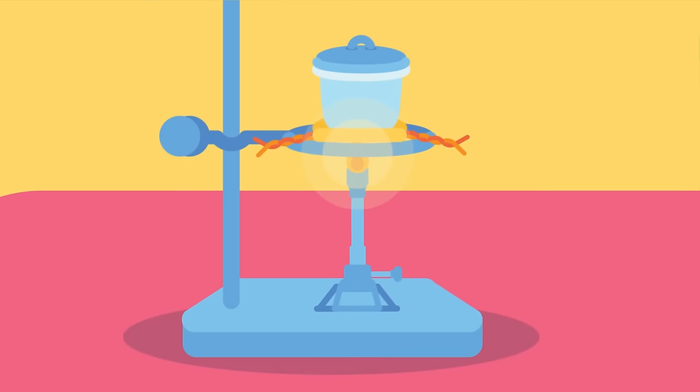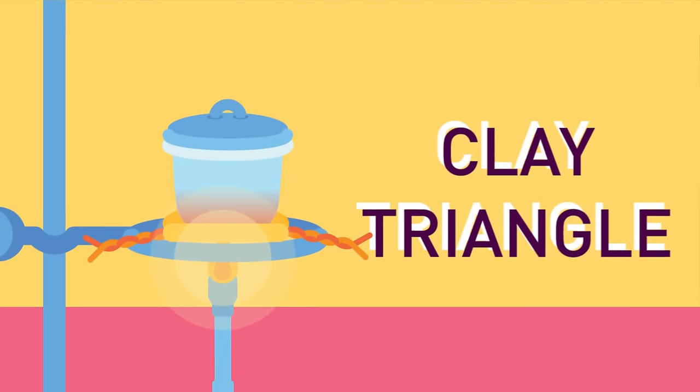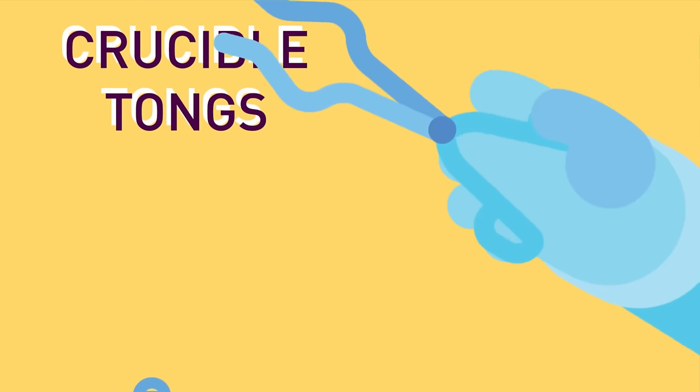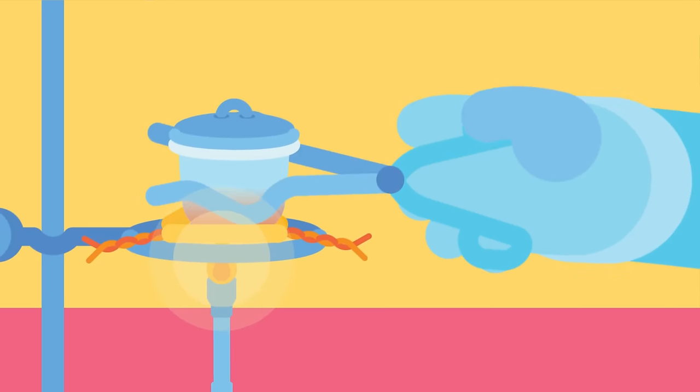Crucible. A ceramic pot, used for holding chemicals during heating at very high temperatures. Clay Triangle. A metallic triangle, used to support a crucible during heating. Crucible Tongs. Used to hold crucibles.